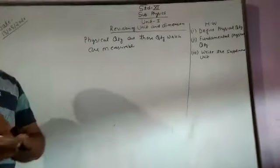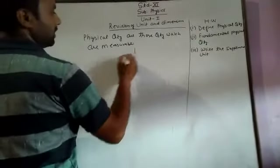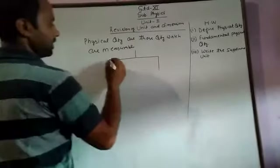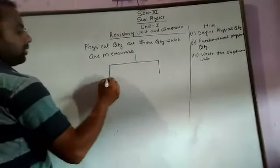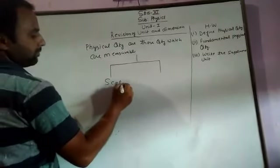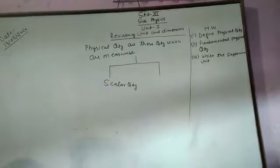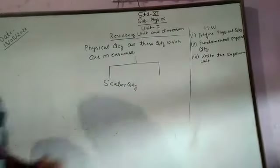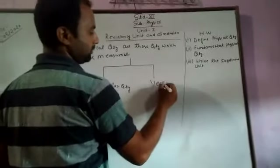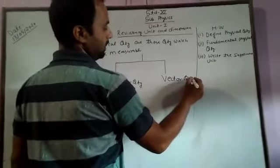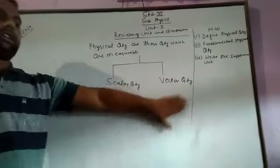There are two types of physical quantities. The first is the scalar quantity and the second is the vector quantity.